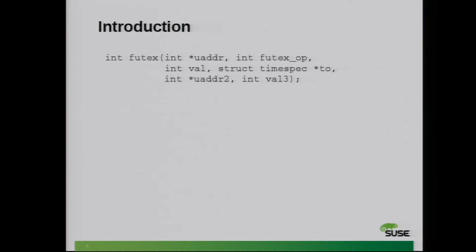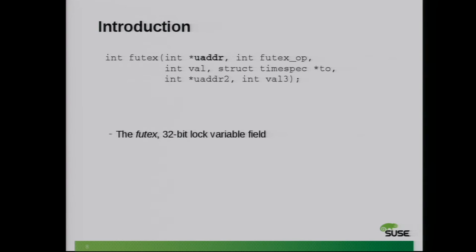This is what the actual call looks like — the interface. There's a pointer to a uaddr, the user address, which is actually the Futex. The second parameter is the Futex operation — what you actually want to do with the Futex. This can be either wait, wake, or requeue.